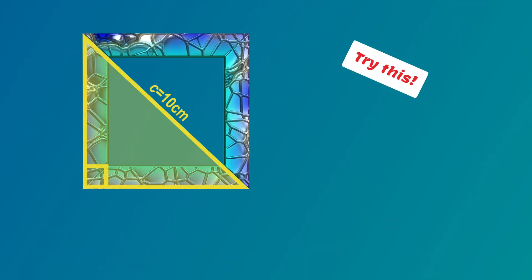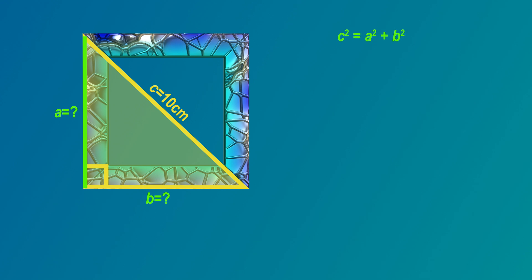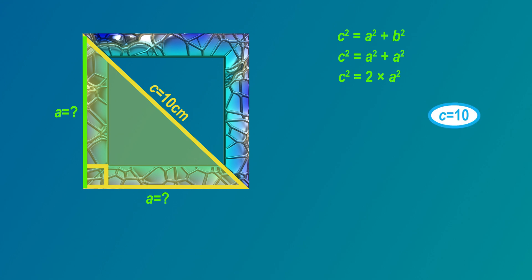Now for the third challenge. This square picture frame has a diagonal of 10 centimeters. What is the length of the side of the square? For this challenge we work in reverse. Notice that the diagonal of 10 centimeters is the hypotenuse, called C. We'll use the C squared rule: C squared equals A squared plus B squared. But the sides A and B are the same in this square. So C squared equals 2 times A squared. Since C is 10, that means 10 squared equals 2 times A squared. So 100 equals 2 times A squared.